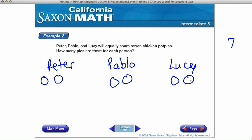So far I've used two pies. However, I have that seventh pie left over. And I need to share that pie equally between Peter, Pablo, and Lucy. So this last pie is going to get split into thirds. And a third is going to go to Peter, and a third is going to go to Pablo,